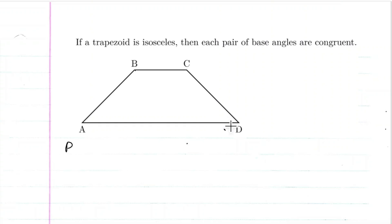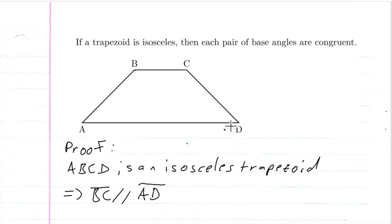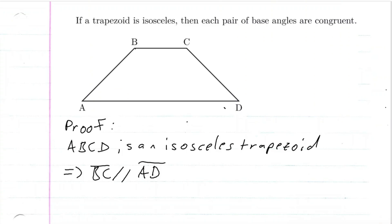Let's go ahead and start this proof. We know ABCD is an isosceles trapezoid. So this implies that, since it's a trapezoid, the bases are parallel — BC is parallel to AD. And since it's an isosceles trapezoid, we know that the legs are congruent, so AB is congruent to CD. Let's draw little marks here.